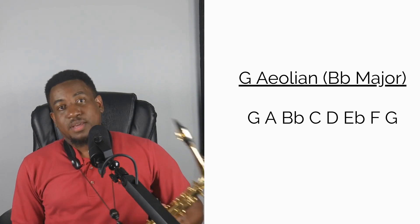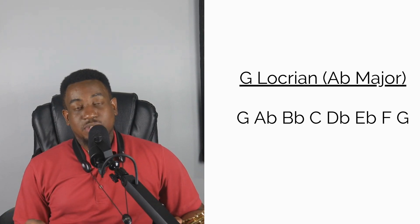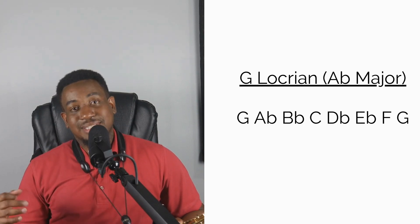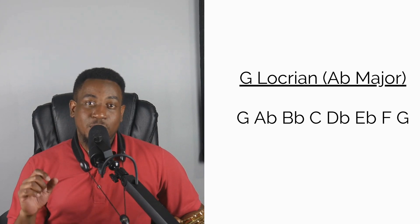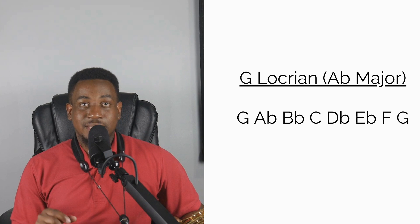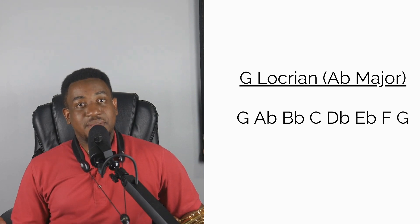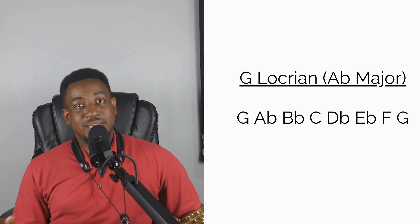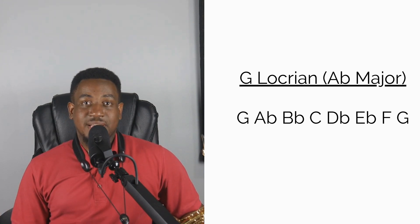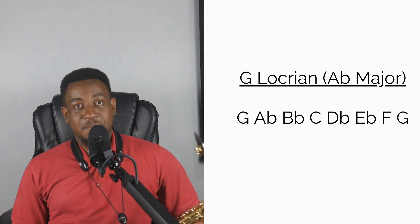The last mode is G Locrian. The Locrian mode is the seventh mode of the major scale, and G is the seventh scale degree of Ab. So you have G Ab Bb C Db Eb F G.